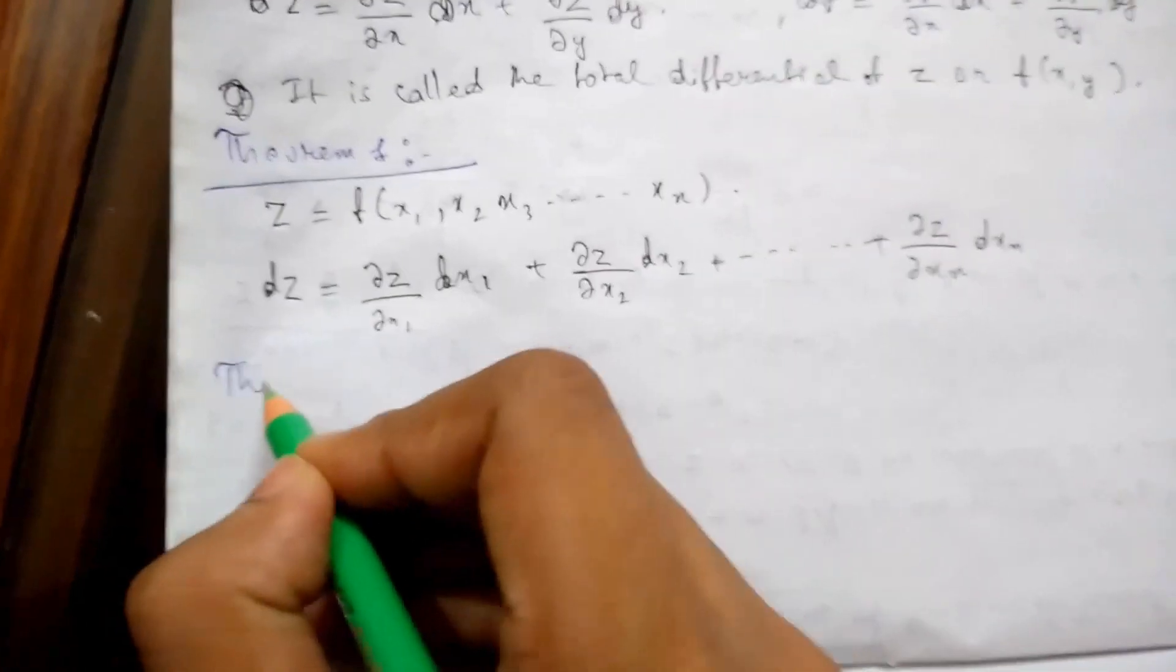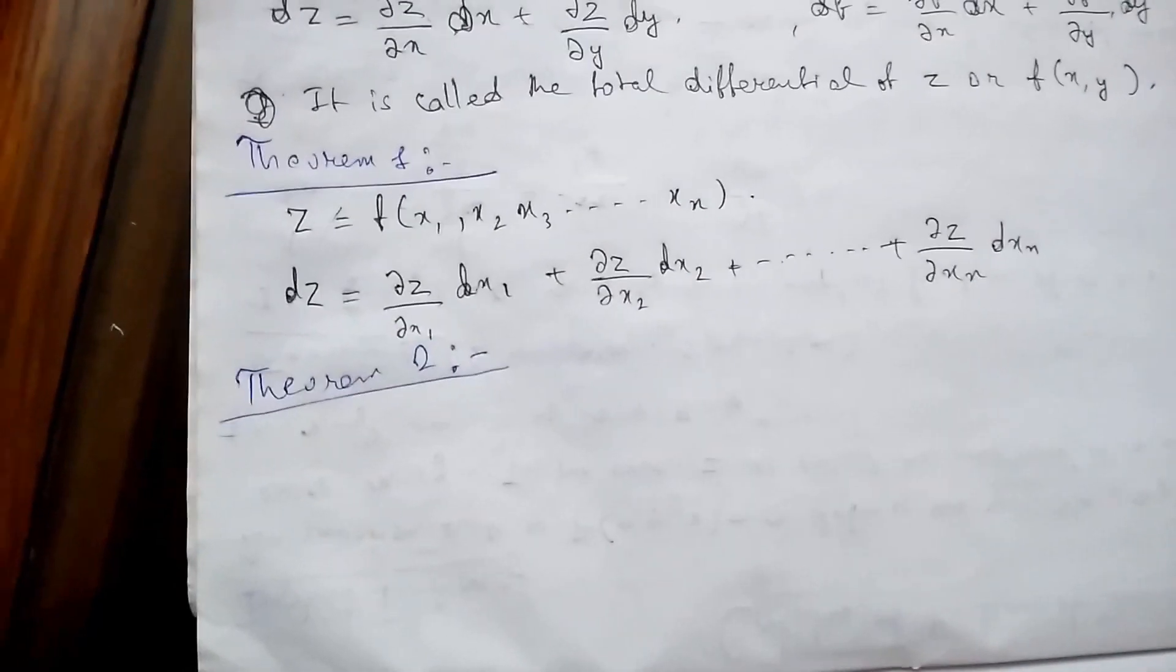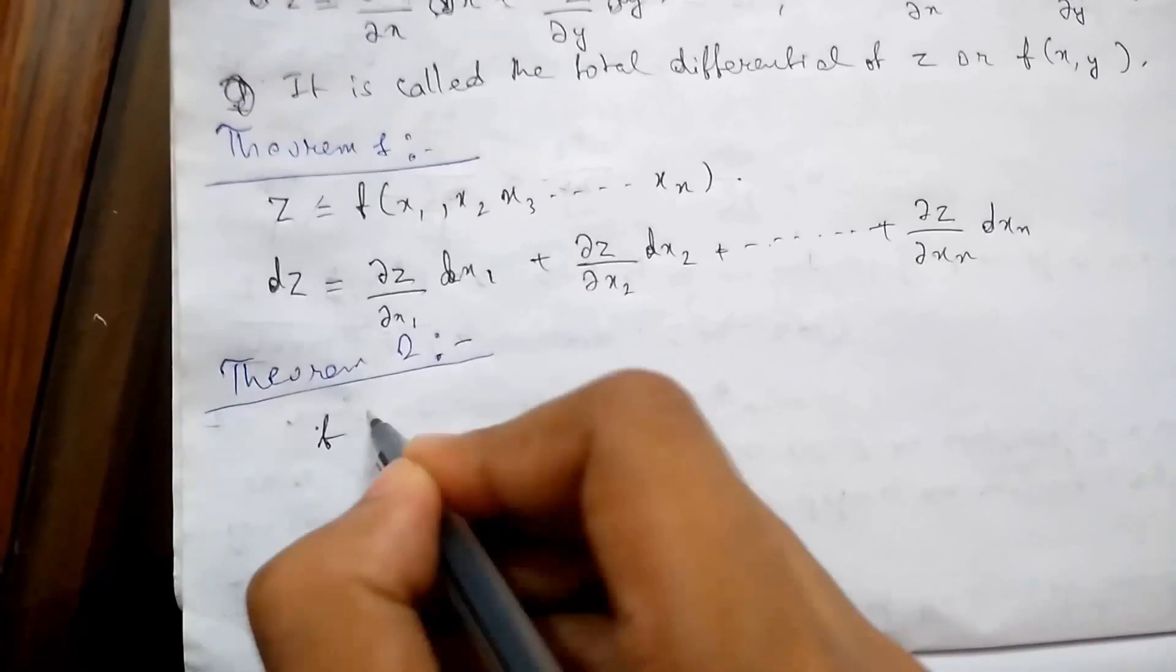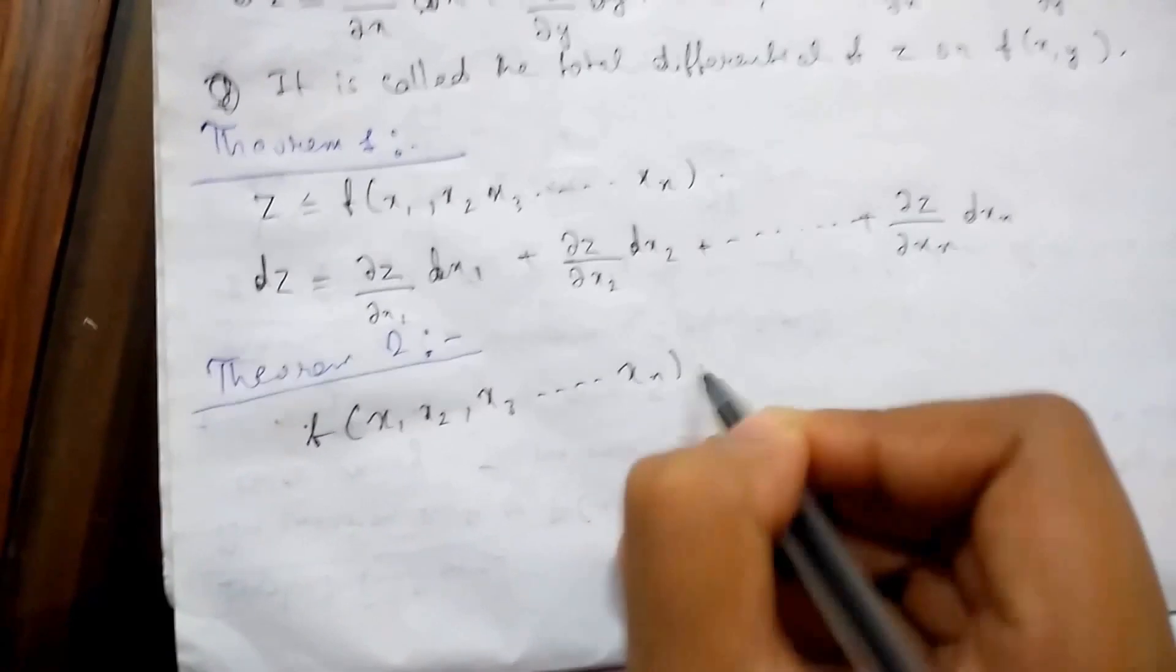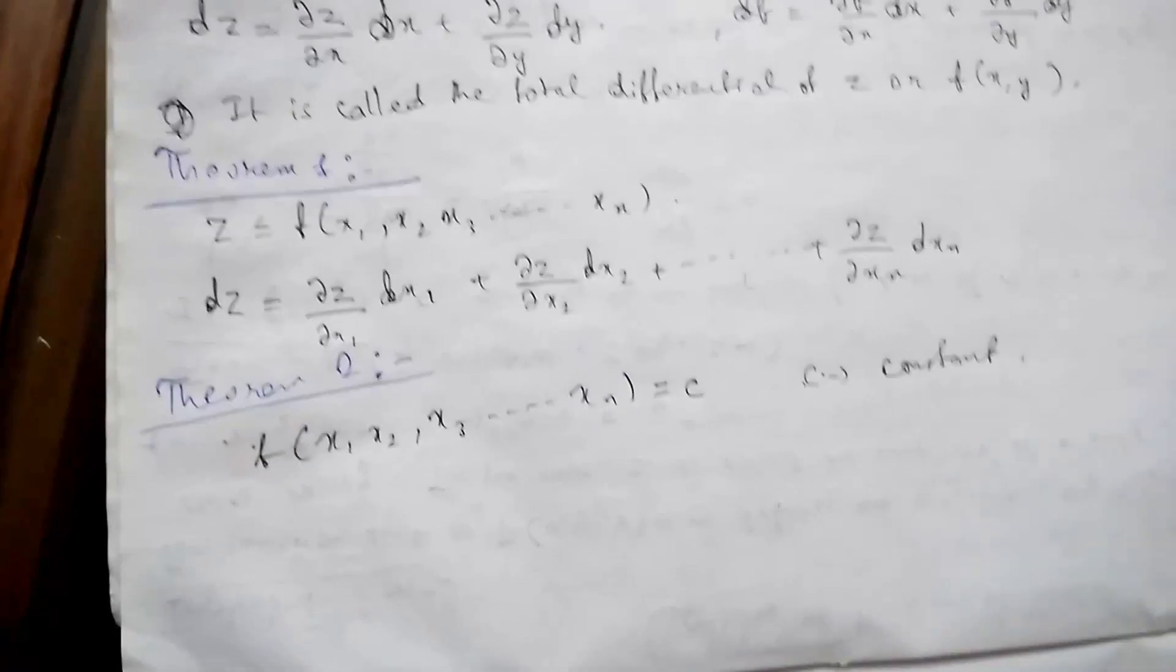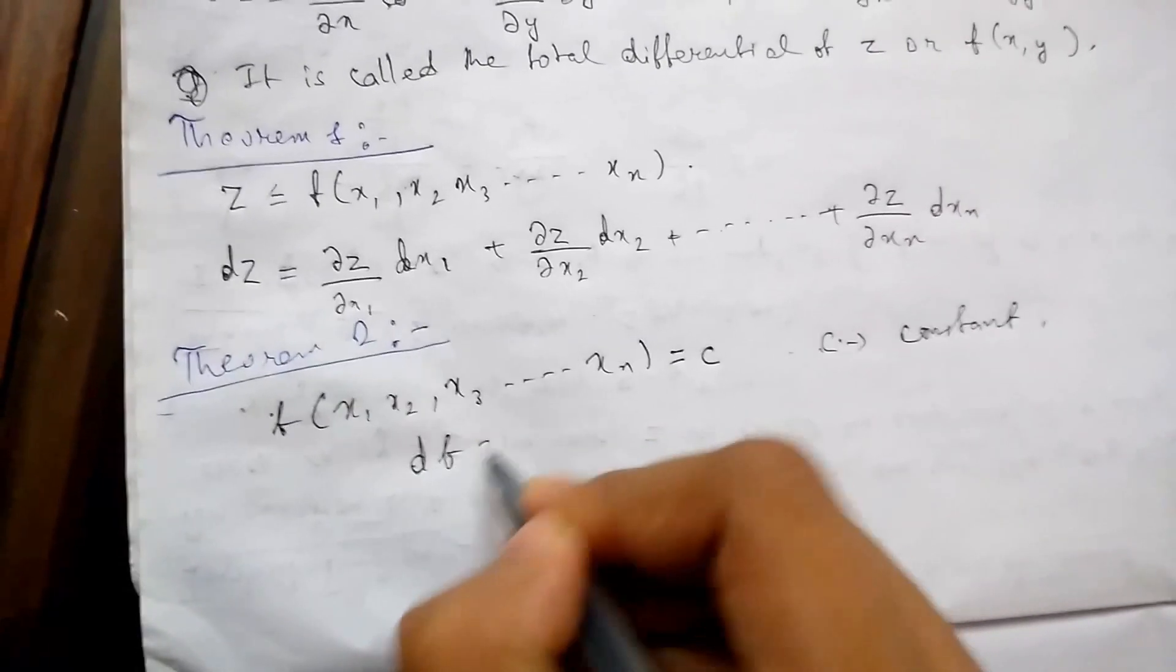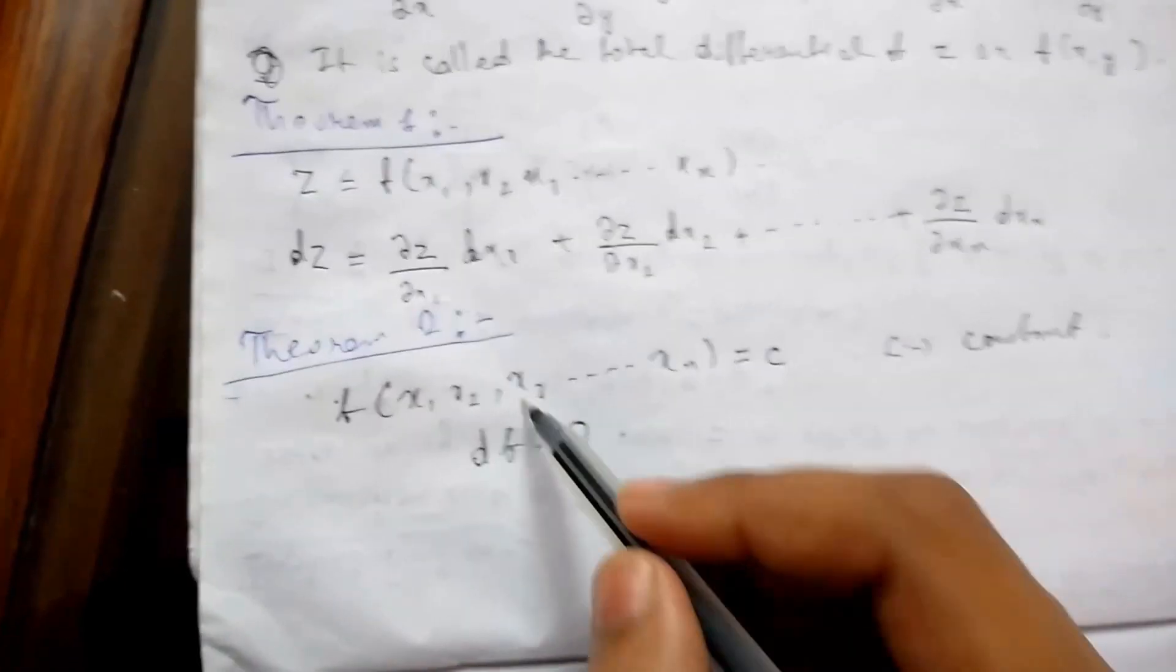Now Theorem 2. This is important. It says that if f or z, that is x1, x2, x3 up to xn equals c where c is a constant, then we can say that df will be 0. So basically this is more important.